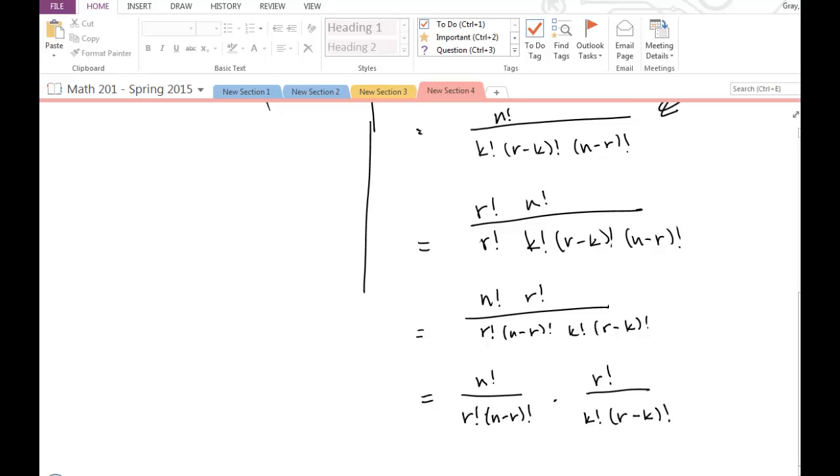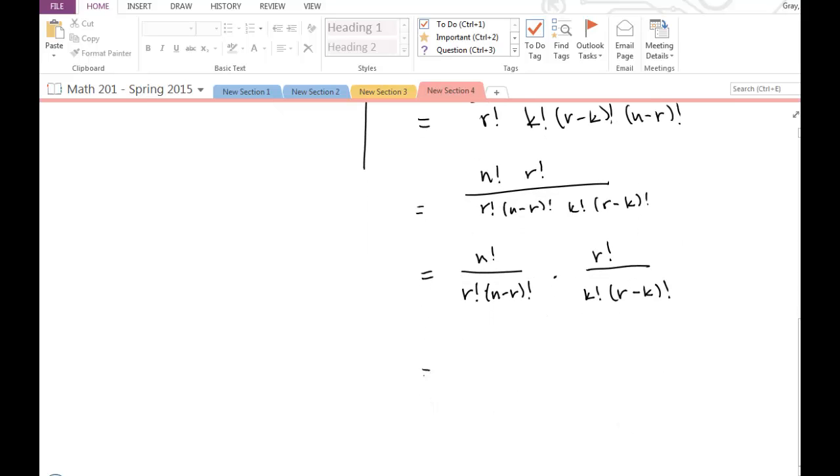And then I get my desired expression back, right? Because n factorial divided by r factorial times n minus r factorial, that's just n choose r. And then r factorial divided by the quantity k factorial times the quantity r minus k factorial, that's just r choose k.